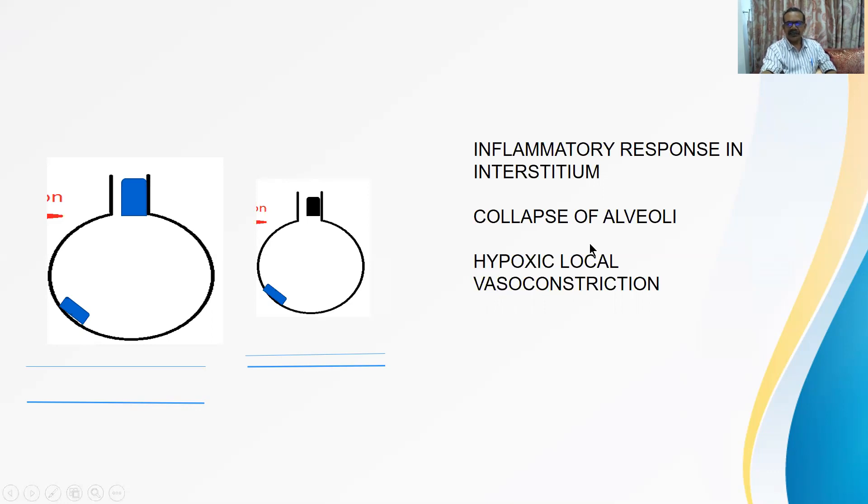Now we have to understand this hypoxic local vasoconstriction in detail because COVID patients, some patients present with distress and no hypoxia, some patients present with hypoxia and no distress. This particular patient is going to present with distress but no hypoxia. Why hypoxia does not happen in this particular group? Hypoxia does not happen. If you see only saturation, we think the saturation is good, it will be reassuring but no.